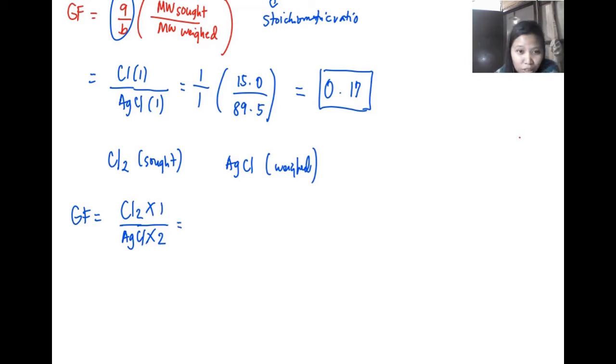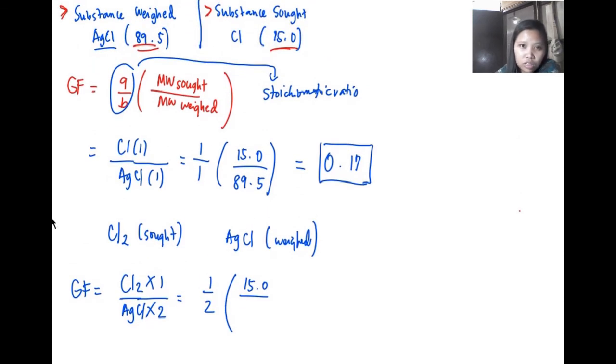Our stoichiometric ratio in this sense, or A over B, is just equal to one half times the molecular weight of the substance that is being sought. We have 15.0 all over AgCl, which is 89.5. So our answer is 1 over 2 times 15 all over 89.5, and the answer for that is equal to 0.08.